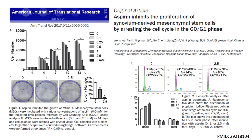Published in the American Journal of Translational Research in 2017, Fan and colleagues demonstrate that aspirin inhibits the proliferation of human synovium-derived mesenchymal stem cells. Over the course of multiple experiments, the authors demonstrate increasing concentrations of aspirin to significantly limit the number of cells as well as the number of colonies that grow out in culture.